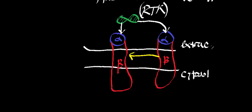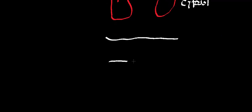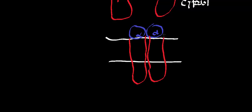As the insulin dimer gets closer and closer to two of those RTK monomers, there's a thermodynamically favorable — negative delta G — process in which the receptor monomers come together. You end up with both beta subunits coming closer together along with the alpha subunits. So you have your two alpha subunits now right next to each other, your beta subunits spanning the membrane into the cytosol, and the insulin dimer bridging them. This effectively activates the tyrosine kinase receptor.